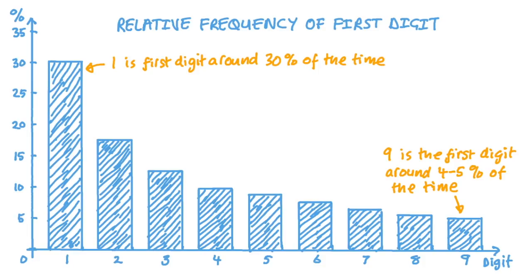We might expect that all digits are equally likely to occur, so numbers beginning with one, two, three, four, five, six, seven, eight, or nine would all be equally prevalent, with a probability of a ninth, around 11%.